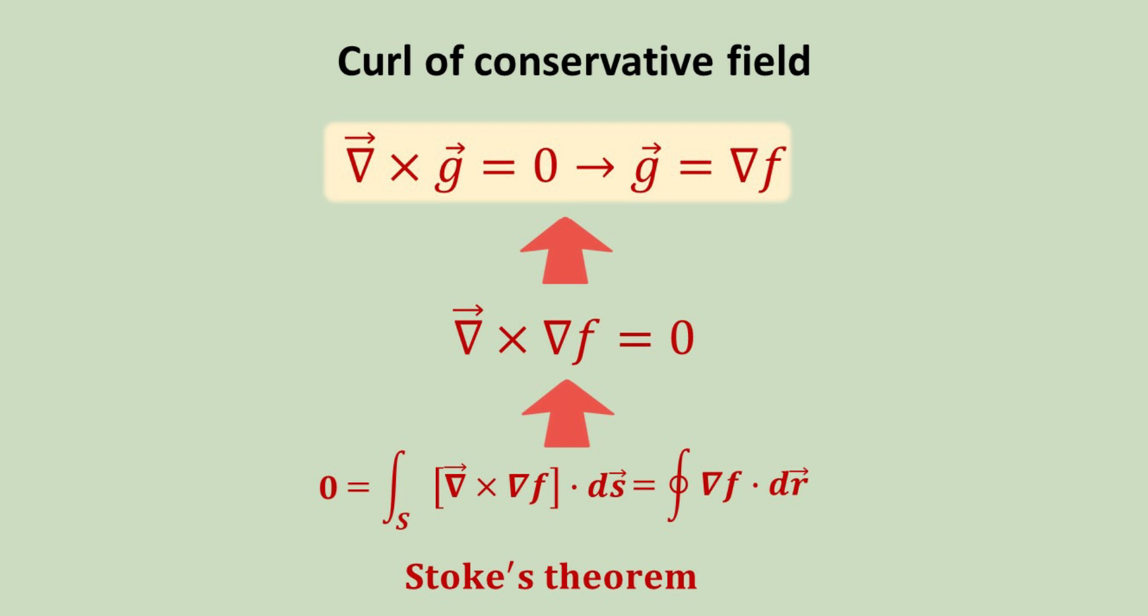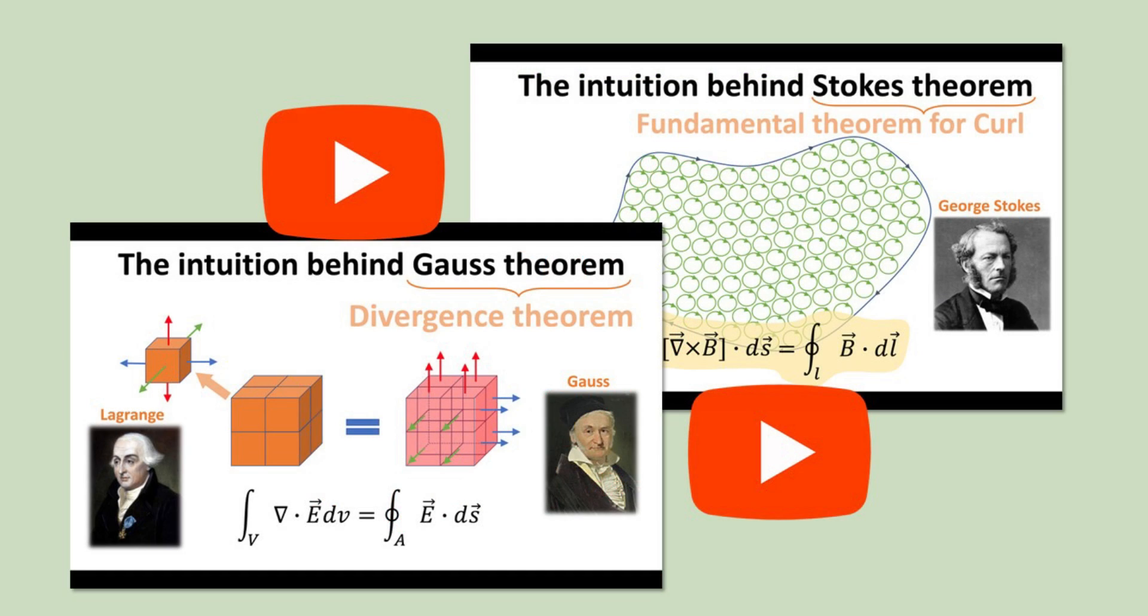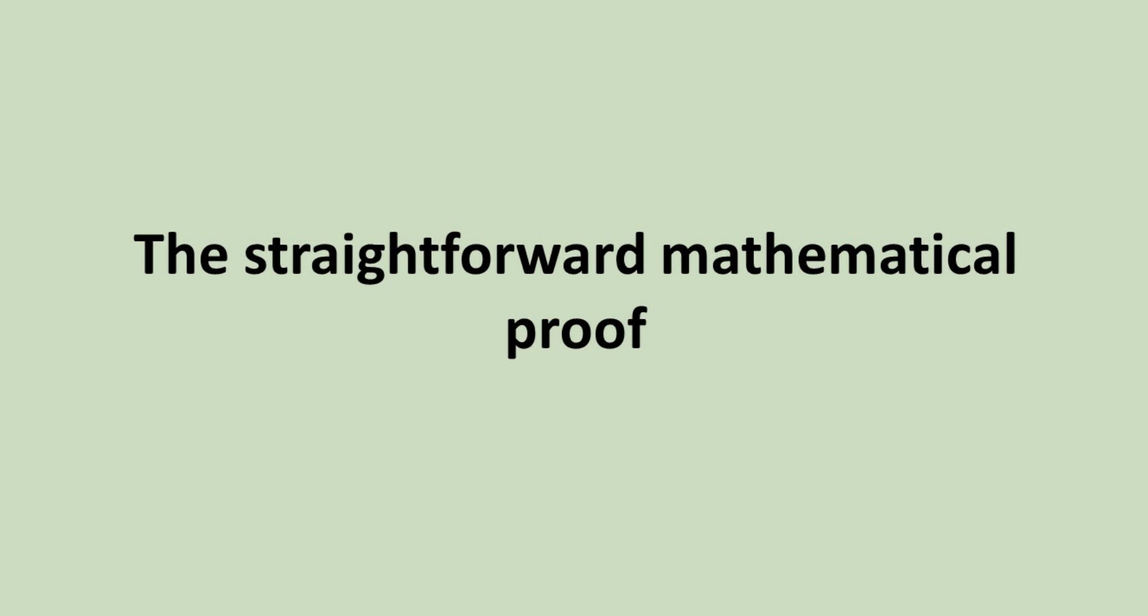Conversely, a vector field that has zero curl is a conservative field and can be expressed as a gradient field of some scalar function. This is an important result, which finds useful application in electromagnetism. Please check out these videos on the Gauss and Stokes theorems if you need a refresher on these topics. You can find them in the electromagnetism playlist.